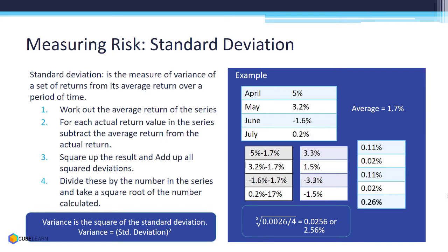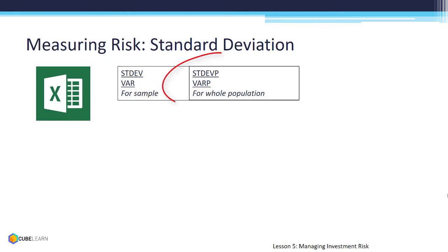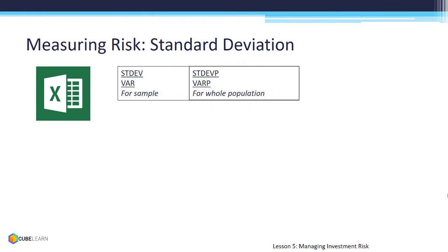Variance is the square of the standard deviation and the formula is given here. Standard deviation can also be calculated using Excel. STDEV is used for checking the standard deviation of a sample, while STDEVP is the formula for calculating the standard deviation of the entire population. Unless specifically mentioned, use the population formula to calculate standard deviation.